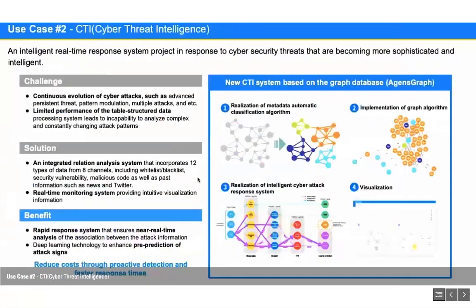The second use case is CTI (Cyber Threat Intelligence). The challenge was the continuous evolution of cyber attacks and the limited performance of table structures. AgensGraph offered an integrated relation analysis system and a real-time monitoring system, enabling rapid response, near real-time analysis, and deep learning to enhance prediction of attacks.